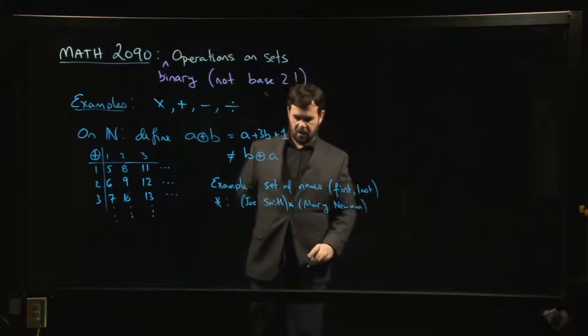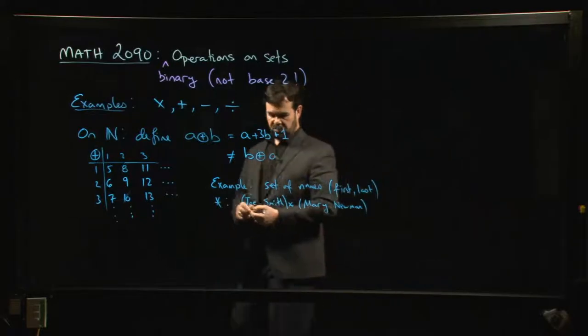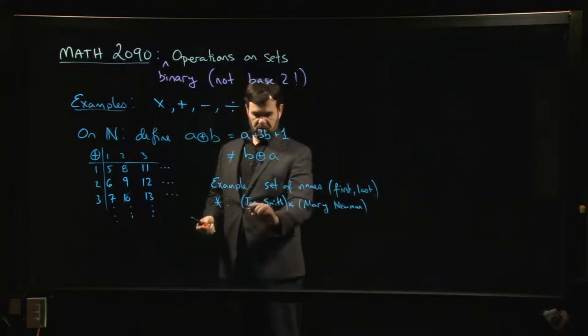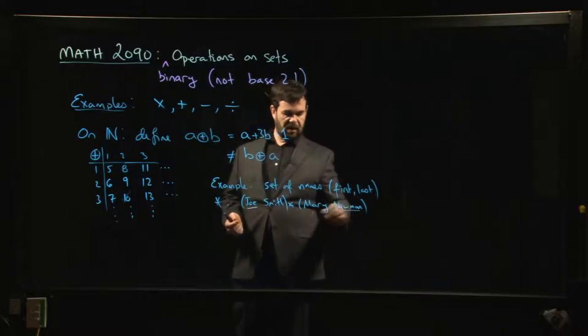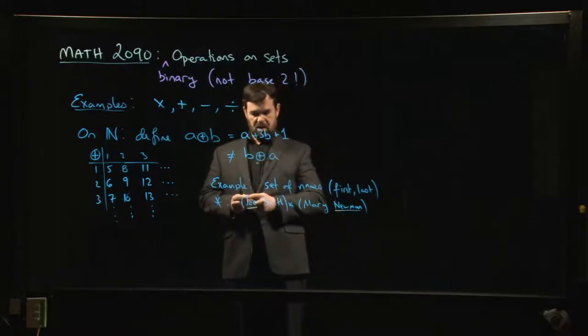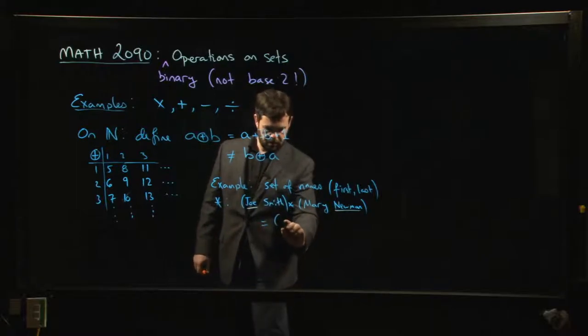There we go. And the operation is going to be this: you always take the first name from the first person and the second name from the second person, and you combine them together to get a new name.